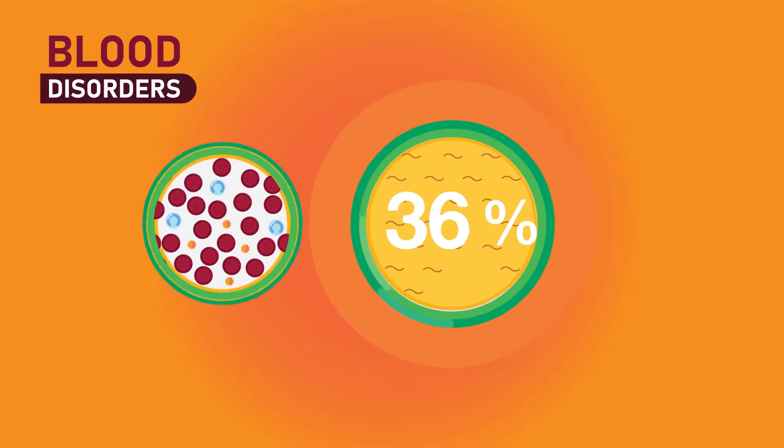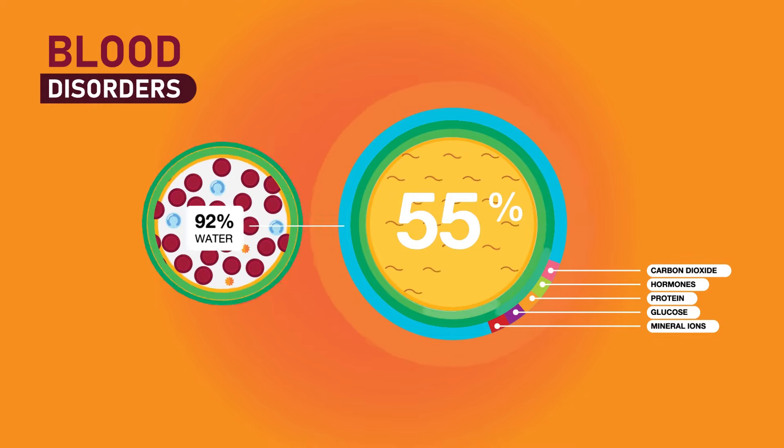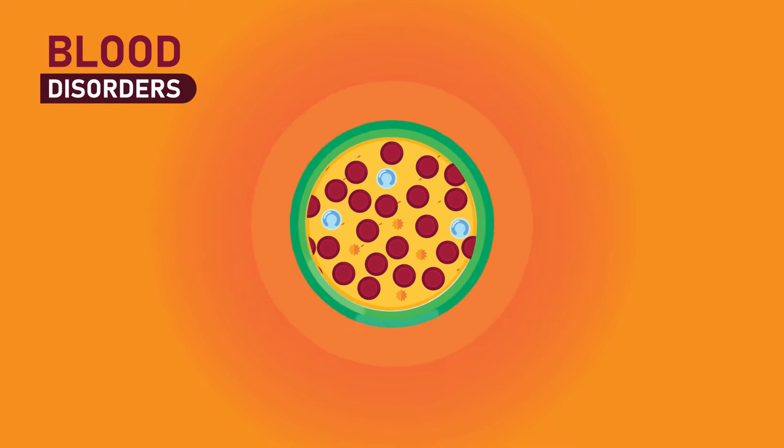Plasma, which constitutes 55% of blood fluid, is mostly water, 92% by volume, and contains dissolved proteins, glucose, mineral ions, hormones and carbon dioxide. All the blood cells' families work together and maintain your body so that you are healthy and strong.